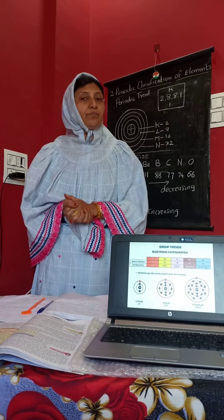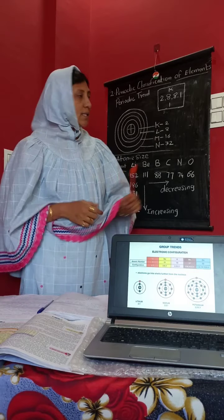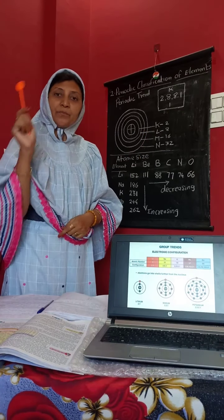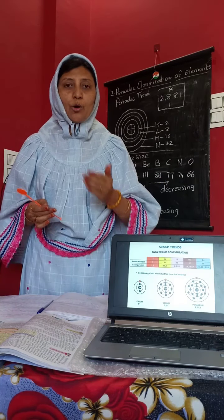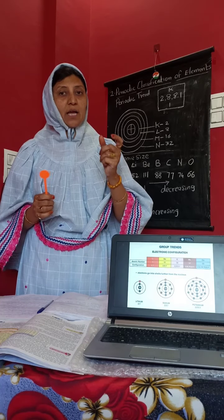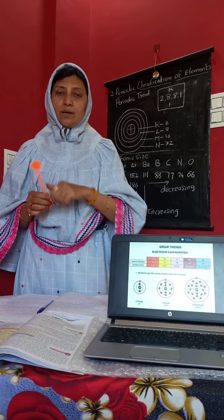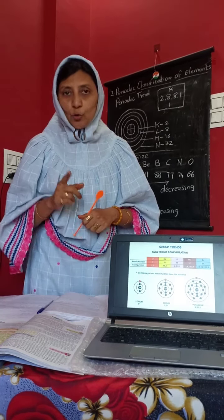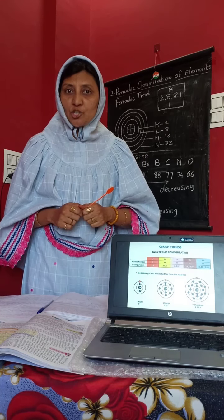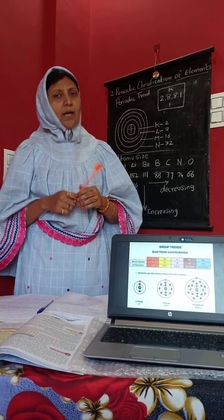The first term in the periodic trend is valency. Valency is nothing but — in the outermost shell, however many electrons are there, those are the valence electrons. Depending on those valence electrons, how many electrons will be lost or gained, or how many electrons will be shared — that determines the valency. Electronic configuration has a direct relation with valency, because it is through the electronic configuration that we know the valency of a particular element.